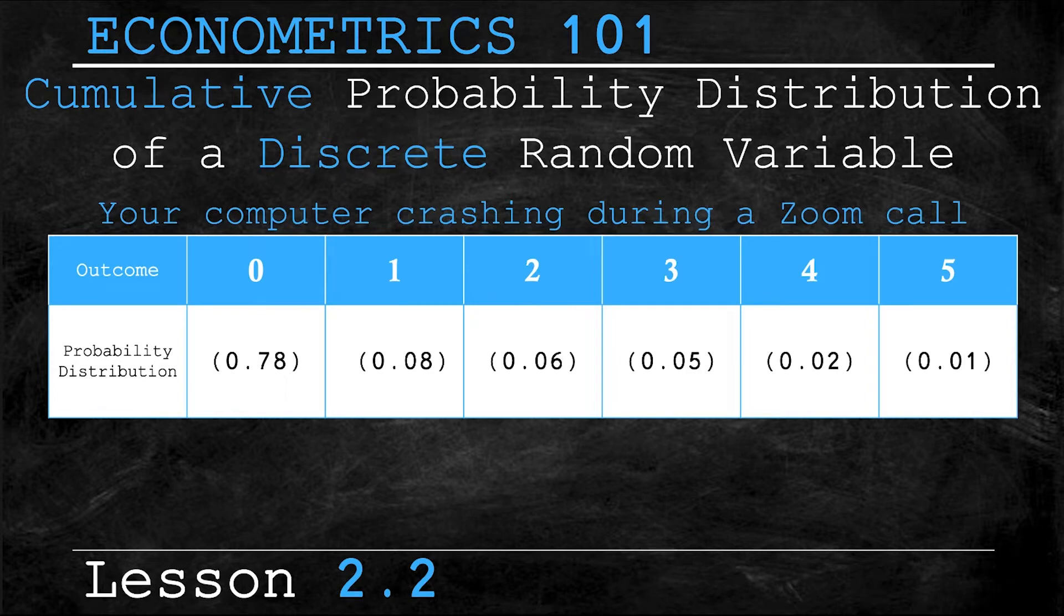For those of you who need a refresher, this table shows the probability distribution that your computer will crash during a Zoom call. The possible outcomes are 0, 1, 2, 3, 4, and 5 crashes. We assumed that after 5 crashes, you'll just rage quit on the call altogether, which means that there's only these possible values for outcomes.